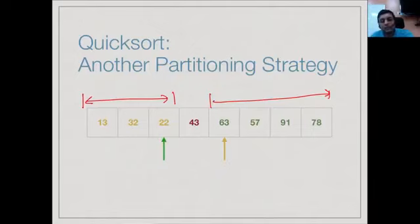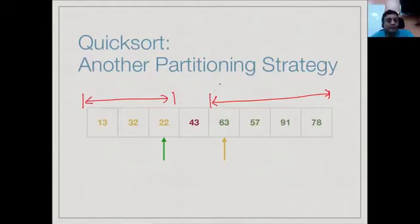Both partition algorithms appear in textbooks and you can choose whichever you find easier. In both cases there is a key invariant condition: two markers indicate the already-partitioned lower and upper parts, with an unpartitioned part between them. When the unpartitioned part becomes empty, the partitioning is done.